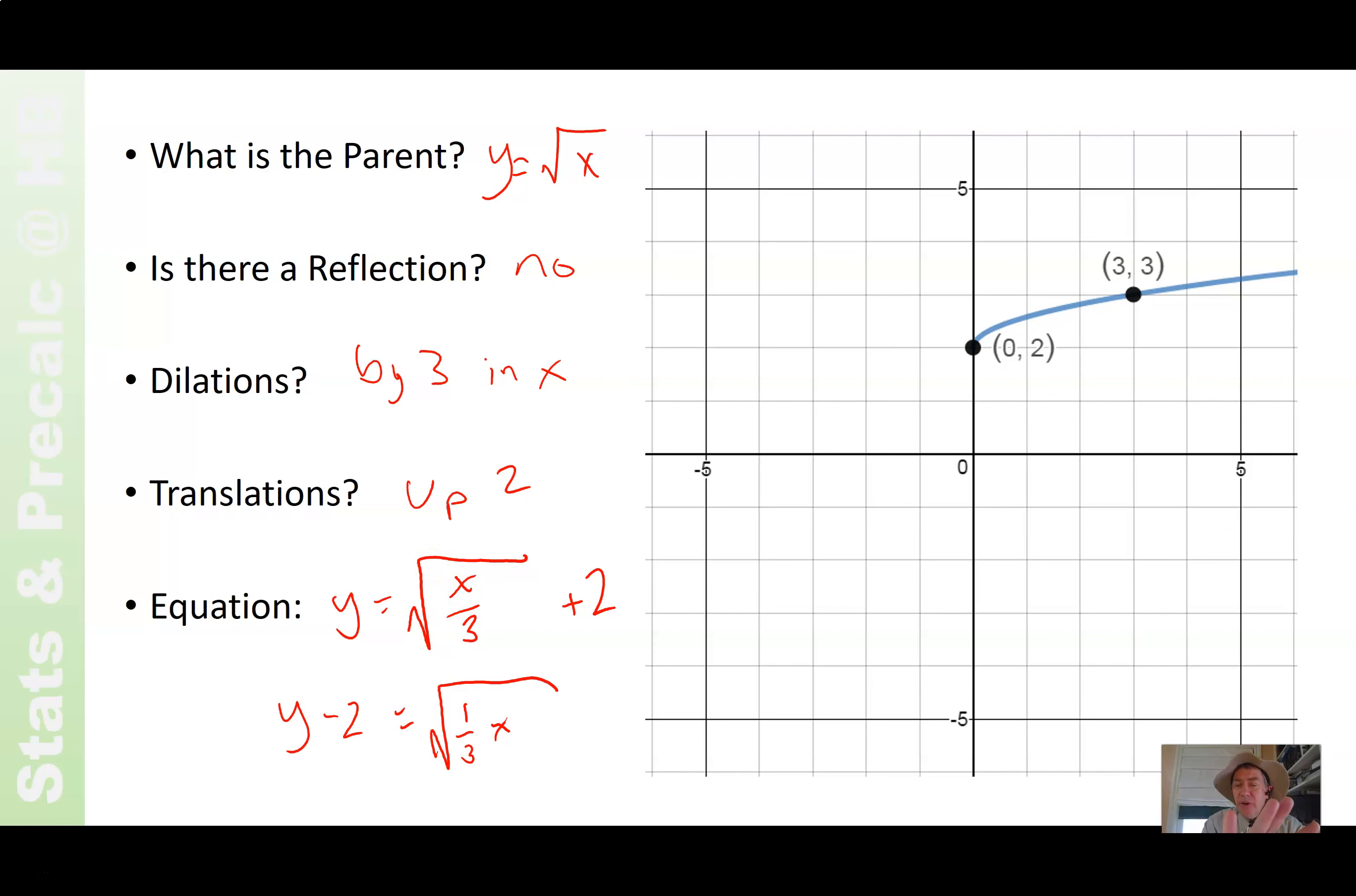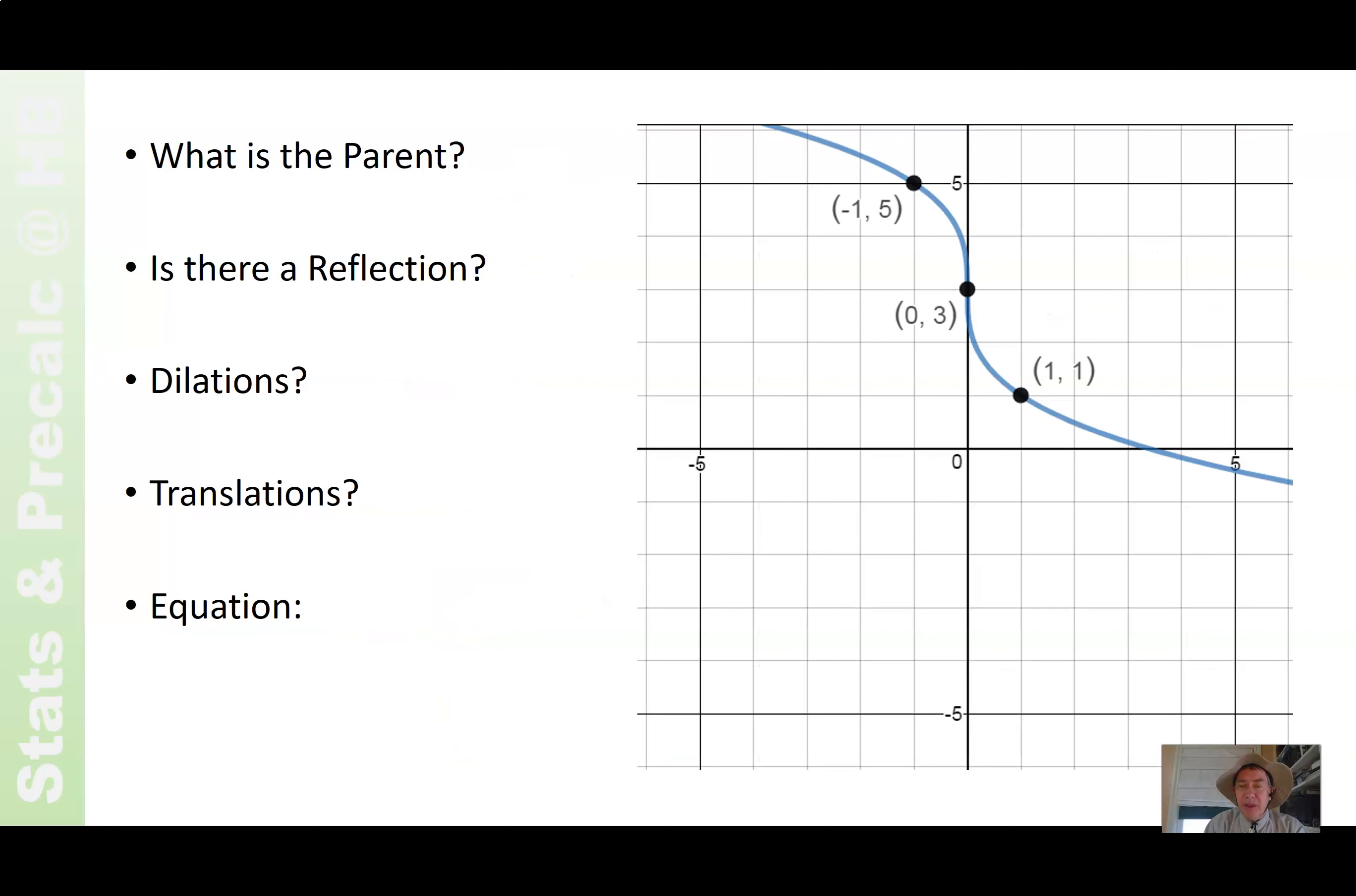One more. Four of them. That way, it fits nicely on two pages. Two to a page. Ready? Again, you can take a look at this and pause and see if you can figure it out on your own and then double check. But here we go with the solution. What is the parent cube root? Because of the shape. Is there a reflection? Yes.